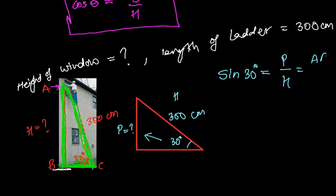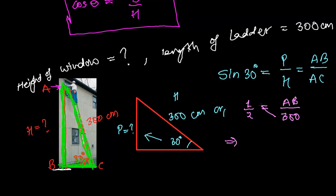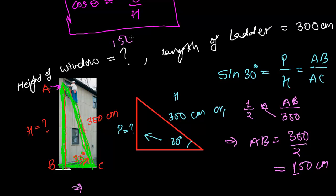We know sin 30° = 1/2, so: 1/2 = AB / 300. Solving, AB = 300 / 2 = 150 centimeters. Thus, the height of the window from the ground is 150 centimeters.